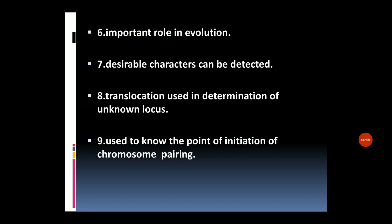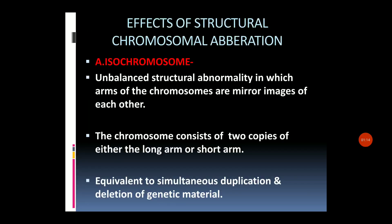Structural chromosomal aberration also plays an important role in evolution, as desirable characters can be detected by using structural aberration. Translocation is used in the determination of unknown locus. It can also be used to know the point of initiation of chromosome pairing.